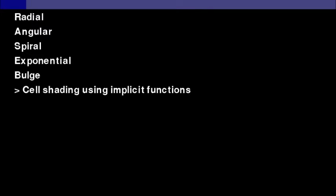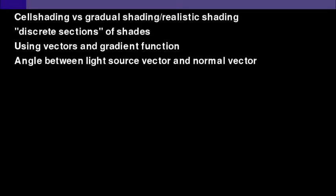Then there's the cel-shading function using implicit functions. The cel-shading on its own is a different way of shading compared to gradual shading or realistic shading. So a real shadow has a gradient to it, at least on smooth surfaces. And cel-shading makes discrete sections of shade, like Japanese cartoons, that sort of shading. To compute this, I'm using vectors and the gradient function, and the angle between the light source vector and the normal vector will describe the shade that has to be applied to the surface at that point.